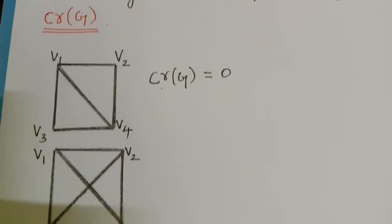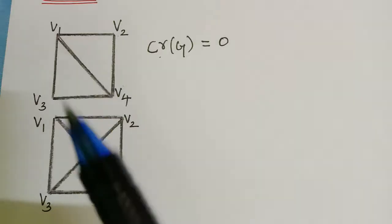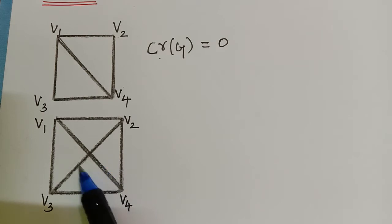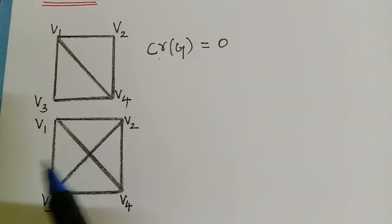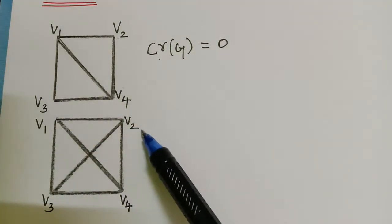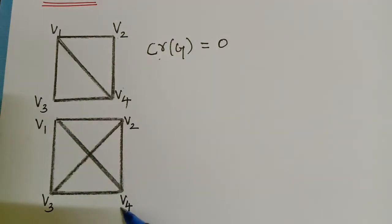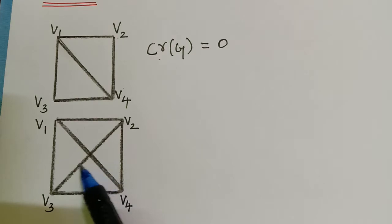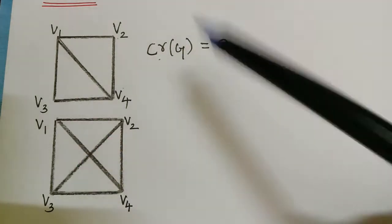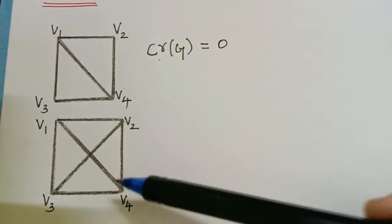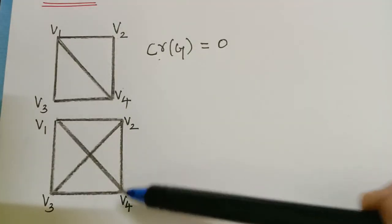A non-planar graph is the one where the edges can also meet at a point which is not a vertex. If we see here, we have only four vertices but the edge V3-V2 and V1-V4 intersect at a point which is not a vertex. So this is a non-planar graph.